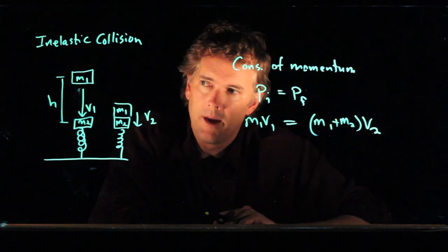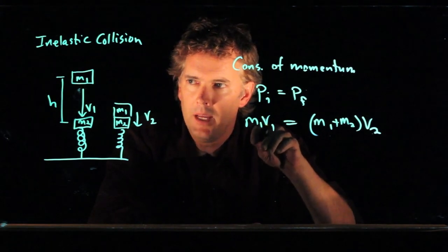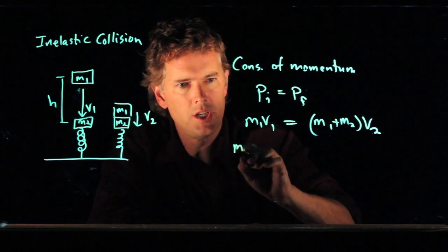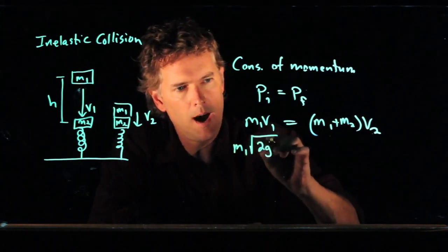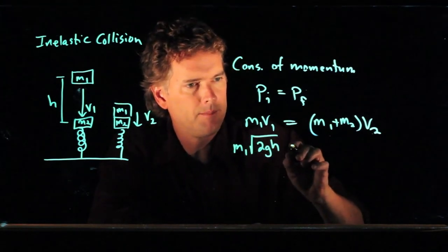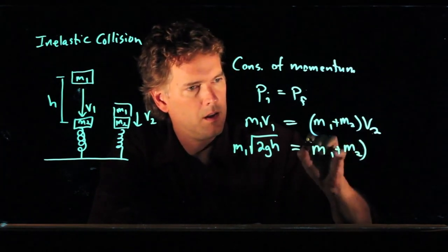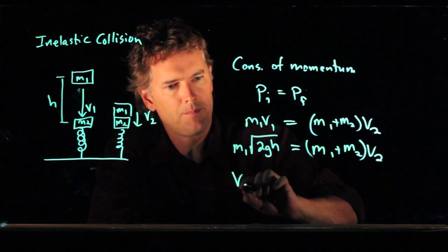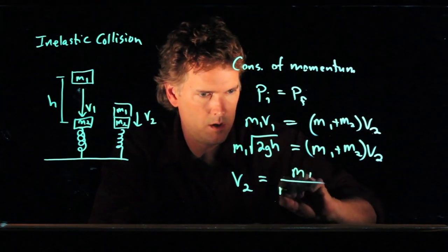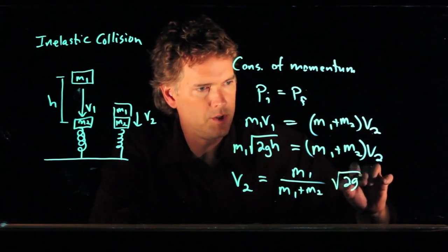And let's go one more step. We know from free fall that the speed V1 is just going to be the square root of 2GH. So if you drop an object from a height H, that's the speed when it's at the bottom. And we can solve for V2. We get V2 is equal to M1 over M1 plus M2, all that times square root of 2GH.